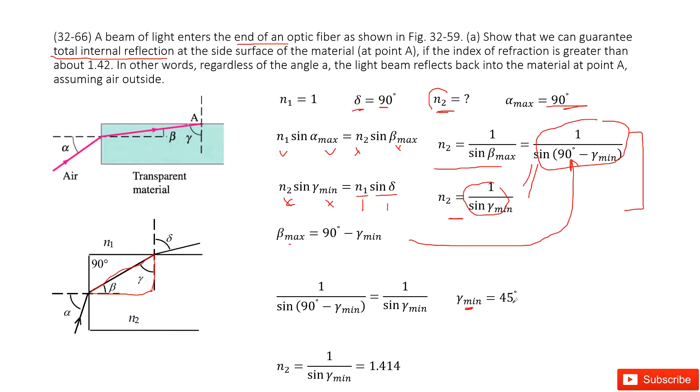So that means we can write down n2 as 1 over sin(gamma_min). So 1 over sin(gamma_min) is 1.414. See, this one is smaller than 1.42. So that means yeah, we proved we can guide in the total internal reflection at the side surface of the material. Thank you.